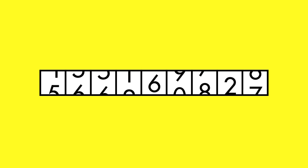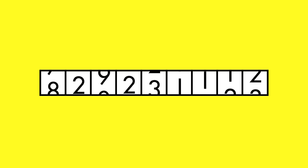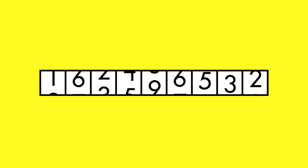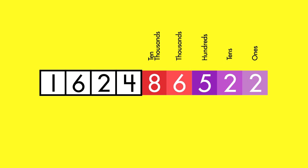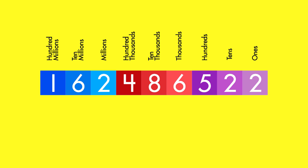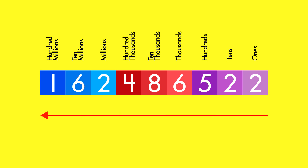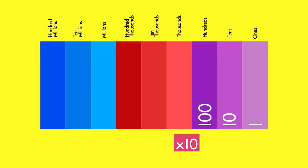Numbers can include an infinite amount of digits. Each digit has a place value. The value of places increases as you move from right to left. The value of each place is ten times the value of the place before.